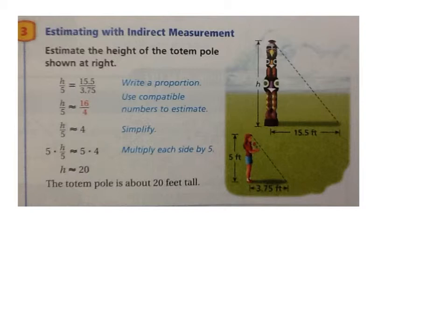It says estimate the height of the totem pole shown at the right. So, we need to do height with height, and then the length of the shadow with the length of the shadow. So, we're going to find the totem pole's height, which is H. Do I know how tall the person is? Yes. Five. Do I know the length of the shadow of the totem pole? Yes. 15.1. Do you see how I'm lining my totem pole information up across the top? Mm-hmm. And then, what's the shadow for the girl? 3.75. Can I use cross multiplication to find out how tall that totem pole is? Yes.